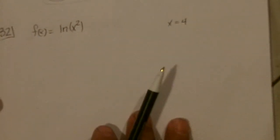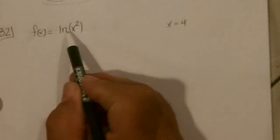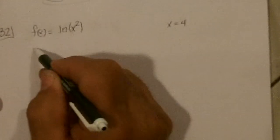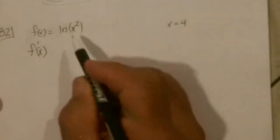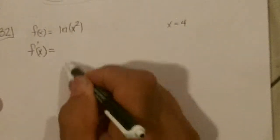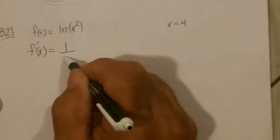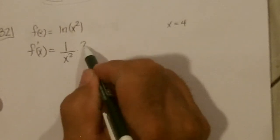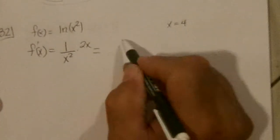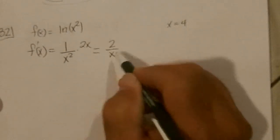32. So it's just the natural log of this. So F prime of X would be, derivative of a natural log of something is 1 over that something, times the derivative of the something, which is 2X, which simplifies to 2 over X.